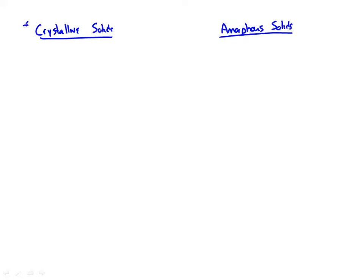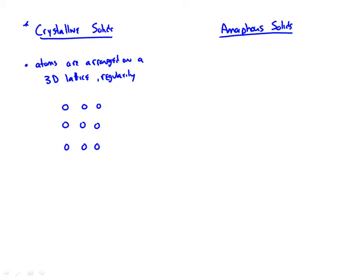We're going to almost exclusively talk about crystalline solids. In crystalline solids, the atoms are arranged on a three-dimensional lattice regularly. The number of atoms and the spacing between the atoms is consistent or constant. We have a special name for this — we say they possess long-range order, meaning there's a basic unit that is repeated over and over.